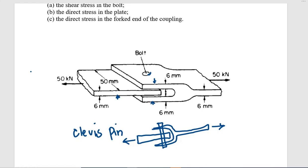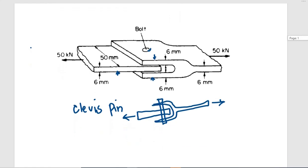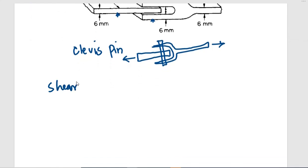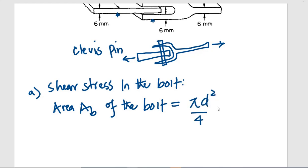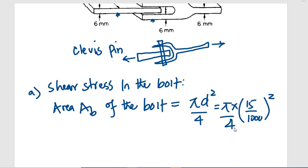Now let us directly go to discussing shear stress in the bolt. First of all, let us look for the area of the bolt. They have told us it is of diameter, so it is cylindrical. Its area will be π d² / 4, which will be π × (15/1000)² / 4 to convert to meters. This gives us approximately 1.767 × 10⁻⁴ square meters.